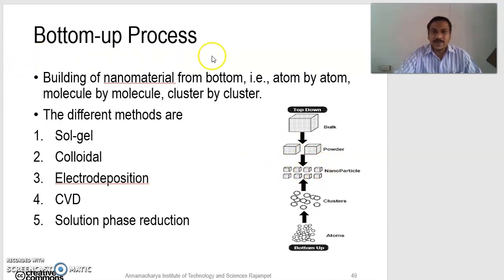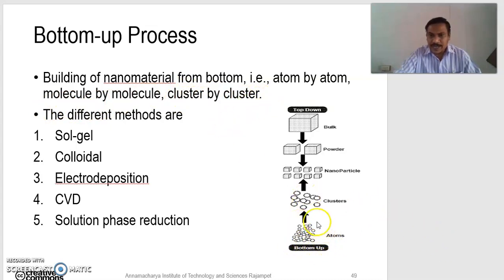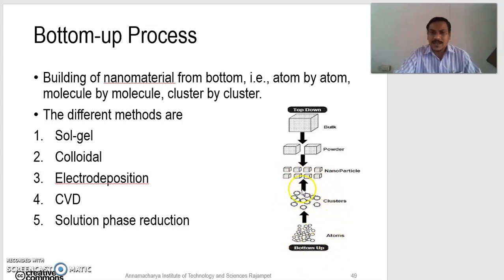The second method is the bottom-up process: building of nanomaterials from the bottom, that is, atom by atom, molecule by molecule, cluster by cluster. In the bottom-up method, we take the atoms, which are combined together to form clusters, and these clusters are again combined together to form the nanoparticles. Bottom-up processes are chemical processes, while top-down methods are physical processes.